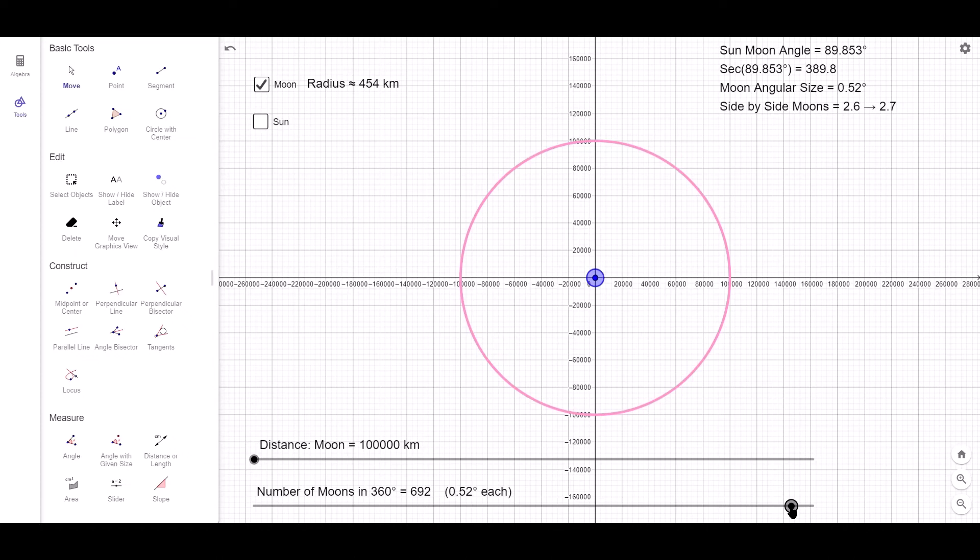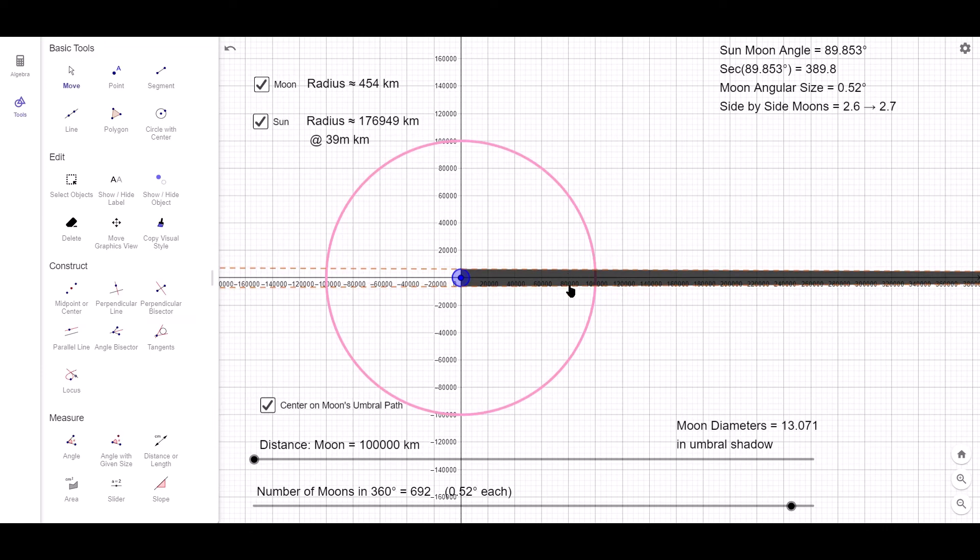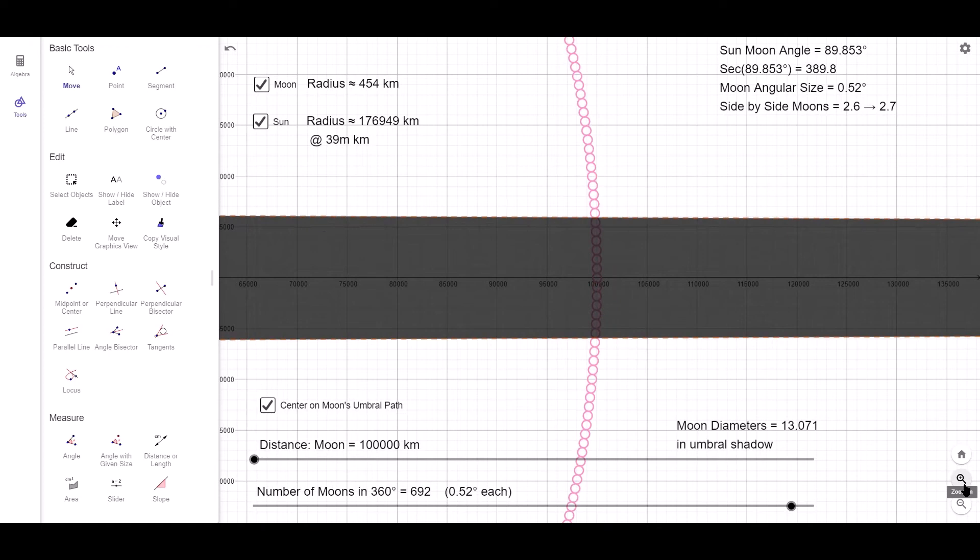When we switch the Sun on, the Earth will be lit up and its umbral shadow will be cast. This checkbox here allows me to centre the screen on this region here. And if you were to count the number of moons that sit side by side in this shadow, you'll see that there's about 13 of them.